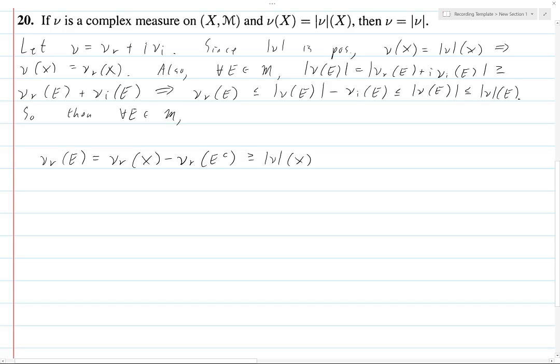But then, we know that ν_r of e complement... If we were to put like an e complement here instead of e, because this thing holds for all subsets e, ν_r of e complement would be less than or equal to total variation of ν of e complement. So, if we flip the... If we put minus signs and we flip the order of the inequality, and so we get minus |ν| of e^c. But now we can bring this together, and this is just total variation ν of e.